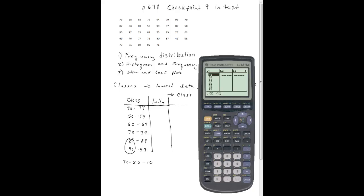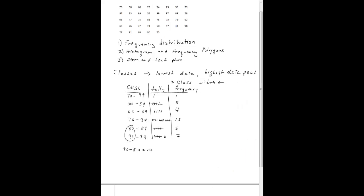So I'm going to go ahead and fill in the tallies from the calculator. When I count how many items are in each class, I get 1, 5, 4, 15, 5, and 7. I double check, when I add that up I have 37 different items. That's n, the number of items on my list. So that's my frequency distribution.